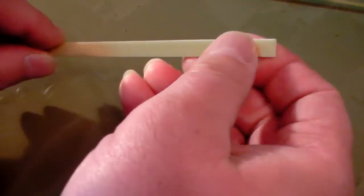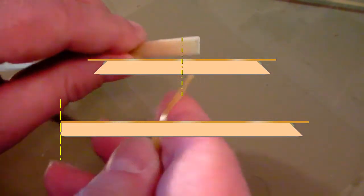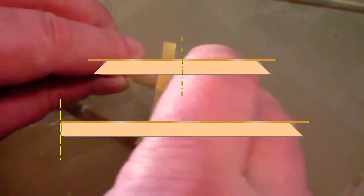Now temporarily attach the photo etch to the kit parts using some thin tape. Notice that the part is longer than the kit part, so there will be some overlap.